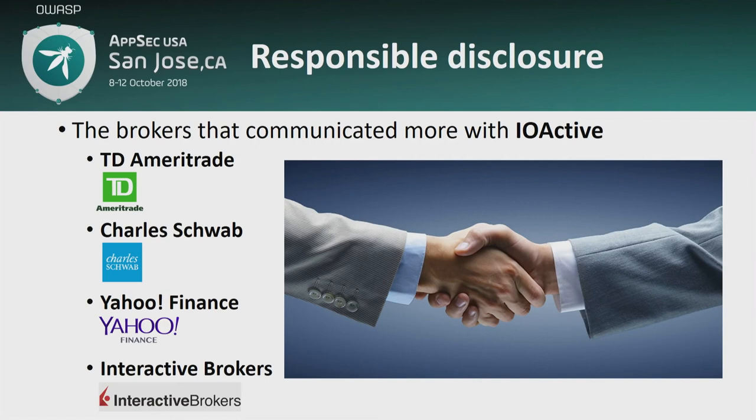Now, we have an interesting high-level problem. We tried to reach the companies, and the first problem was that we couldn't find a main point of contact to report security vulnerabilities — all we had was 'support@company.com.' We sent reports with this information, and most companies never replied. Only the big names — TD Ameritrade, Charles Schwab, Yahoo Finance, Interactive Brokers — were very responsive, sometimes the same day. I think there's a basic correlation between the amount of money they invest in cybersecurity and how responsive they are. They said 'thank you so much, let's work together to fix the vulnerability.' But the rest never replied, so this is why I waited until Black Hat a couple of months ago to do full disclosure.